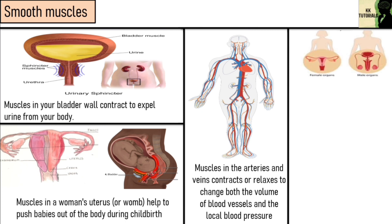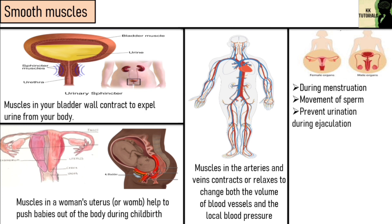Both male and female reproductive systems include smooth muscles. In women, during menstruation, smooth muscles in the uterus contract to expel the uterine lining. Smooth muscles help sperm to move along the male reproductive tract. To prevent urination during ejaculation, the sphincter muscle constricts. The tunica dartos is a smooth muscle that contracts or expands to regulate temperature of the testicles.